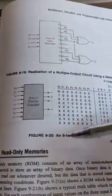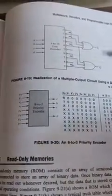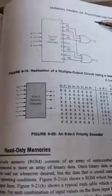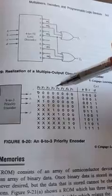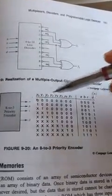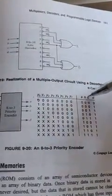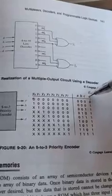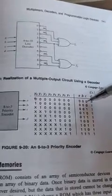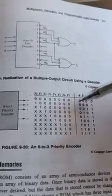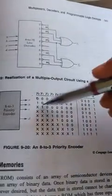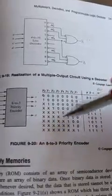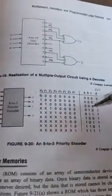Similarly, here we have 8-to-3 priority encoder. That was 10-to-4, this is 8-to-3. You will be having Y0 to Y7 and ABC. This last column D refers to enable. Whenever it is 0 no matter which input signals are active the output will be 0 itself. Whenever the enable is high this active input signal will be taken into consideration to make it output.